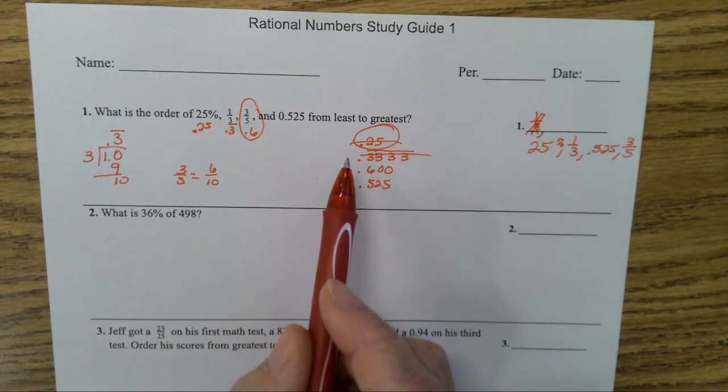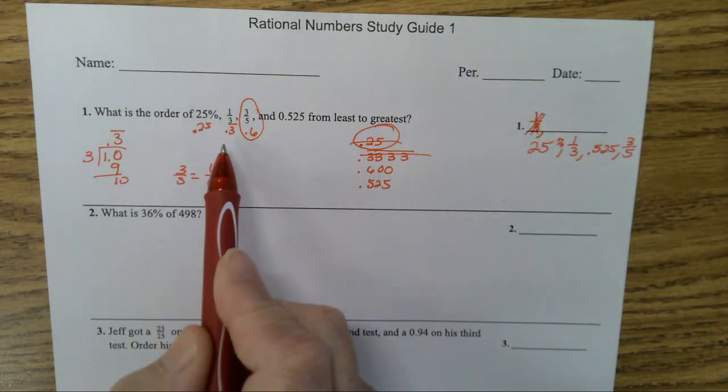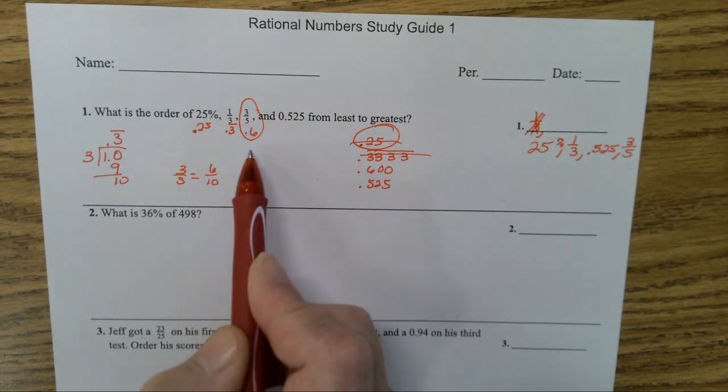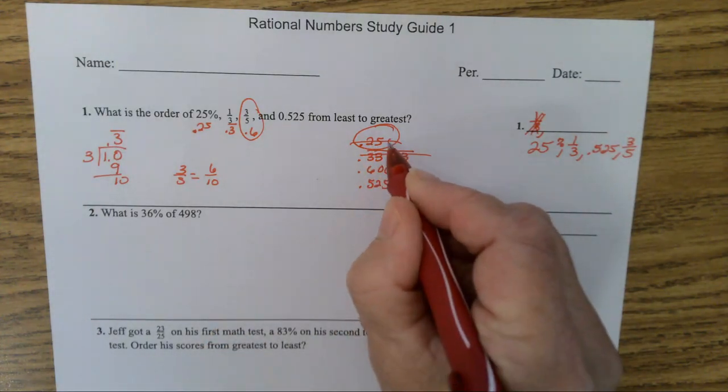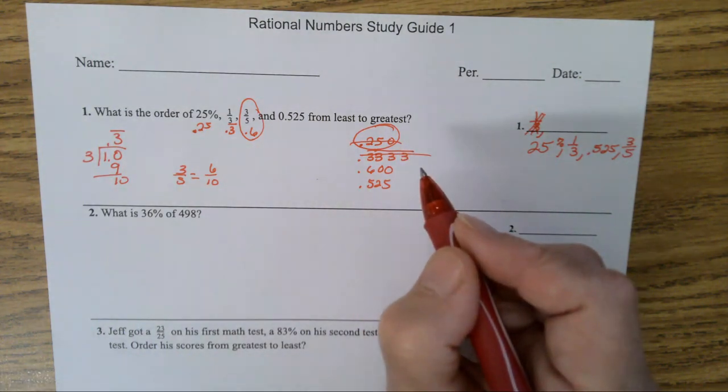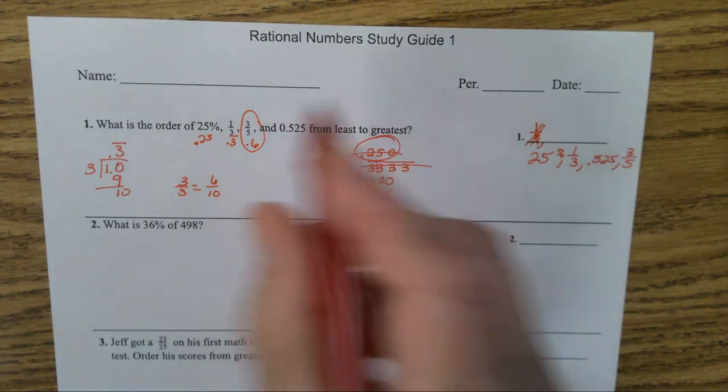So once again, how do you do this problem? Change them to decimals - or you could change them to fractions, but decimals is just easier. 25% is 0.25, 1/3 is 0.3 repeating, 3/5 is 0.6. Then I line them up, and if you have empty spots you fill them with zeros.